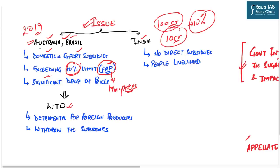According to these countries, India is presently breaching this 10% limit and thereby violating the norms of GATT and international trade. Furthermore, they claim that because of such subsidies, farmers are encouraged to grow more and more sugarcane, leading to excessive production and a price crash in both domestic and international markets. This deteriorates the revenue of Australia, Brazil, and Guatemala, which is why they filed a case in the WTO dispute settlement body.